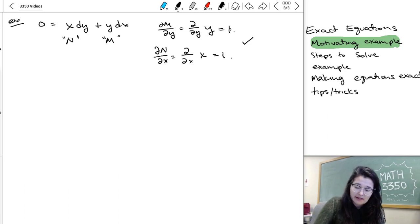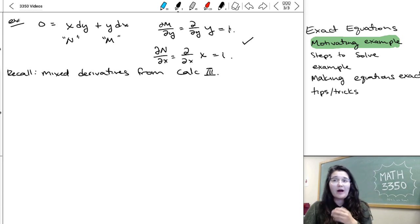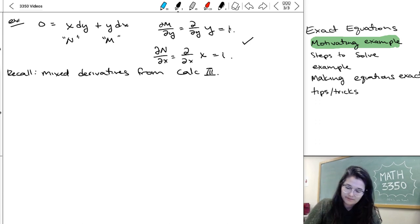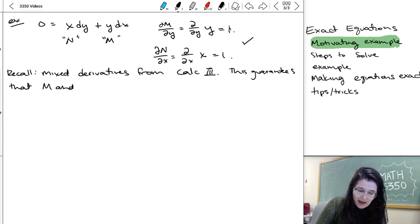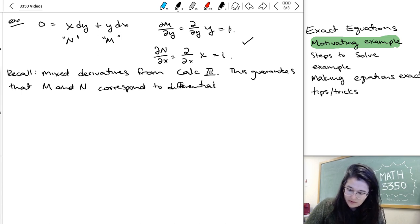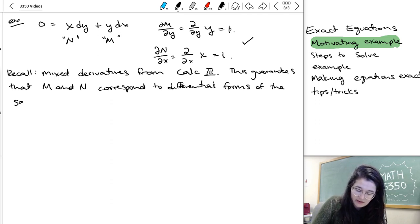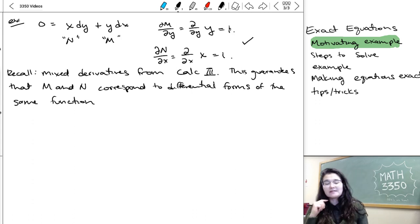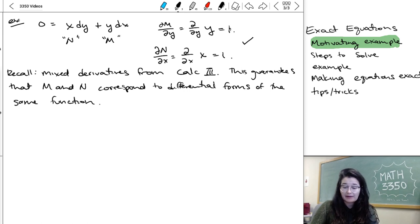To kind of understand why we have this condition, you can think about mixed derivatives from calculus three. So requiring that the derivatives are the same is going to make sure that m and n correspond to differential forms of the same function. So kind of m is going to be related to derivatives in x, n is going to be related to derivatives in y. So checking this condition is making sure that the mixed derivatives are equal, which was something that you wanted to be true of functions in calc three, if you remember that. It may have been a while.